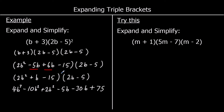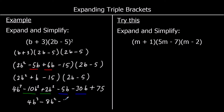So collect the like terms — we've got the b squared terms and the b terms to add together. We've got 4b cubed. Negative 10b squared plus 2b squared is negative 8b squared. Negative 5b take away 30b is negative 35b. And plus 75 on the end.